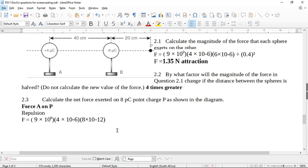And then we are going to put it all over the distance squared. Now look here, the distance between P and A is 40 plus 20. So we're going to divide by 40 plus 20 squared. So 40 plus 20 is 60 centimeters, which is 0.6 meters. So now the force A on P, put this in your calculator.